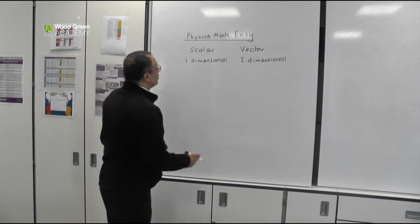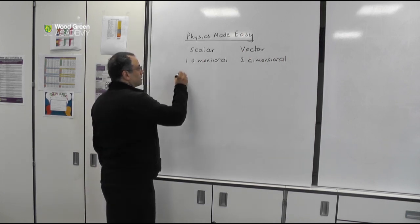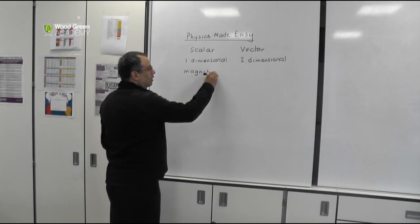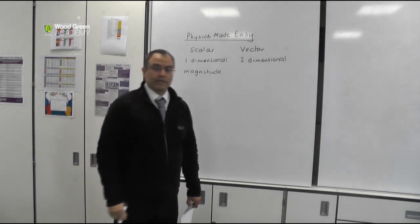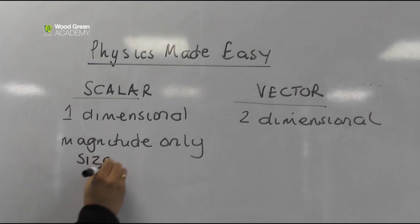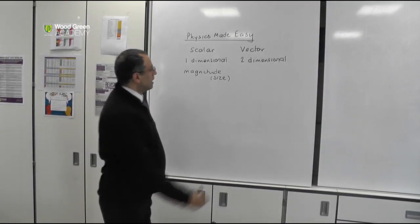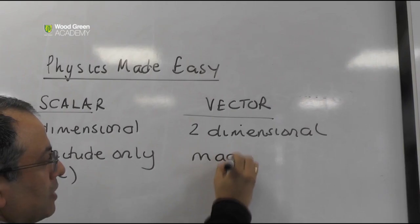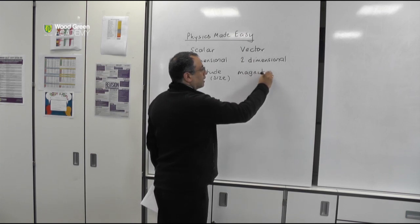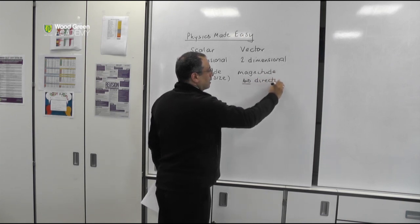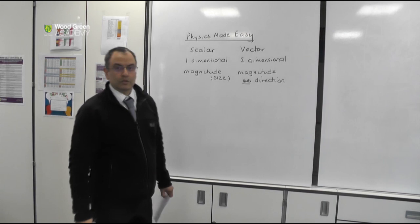And so, what does this mean? This means that this has magnitude. The word magnitude can be replaced by a simple word which is more meaningful: size, or the amount of something. And a vector is any quantity that has magnitude and direction. And this is what makes it two-dimensional.